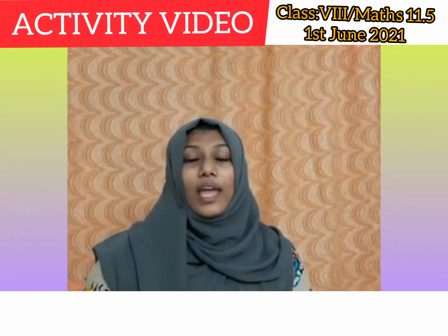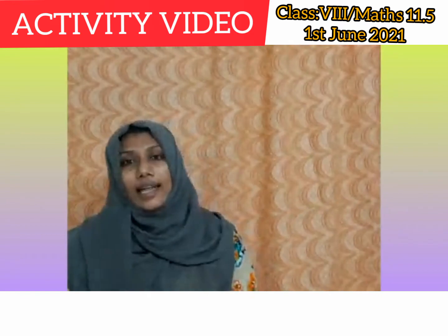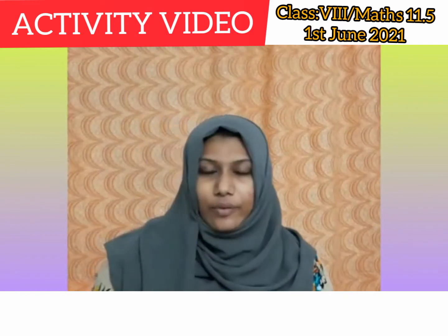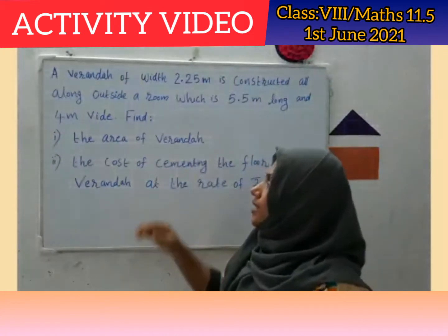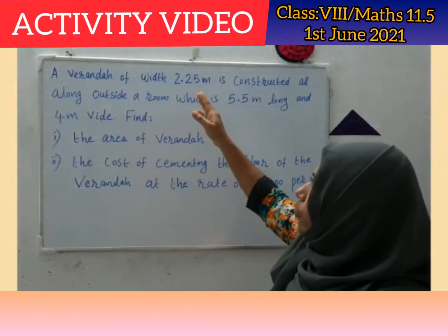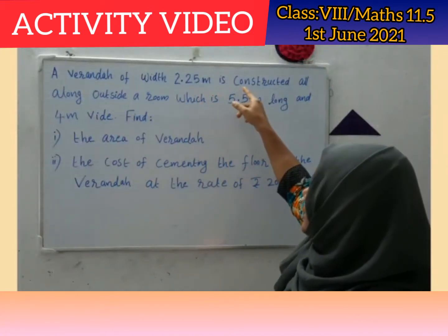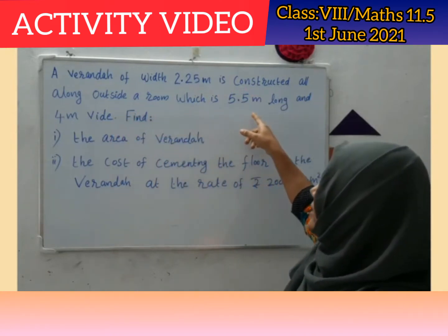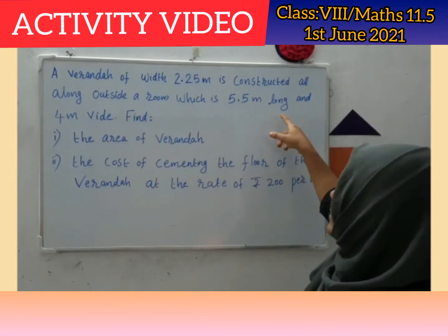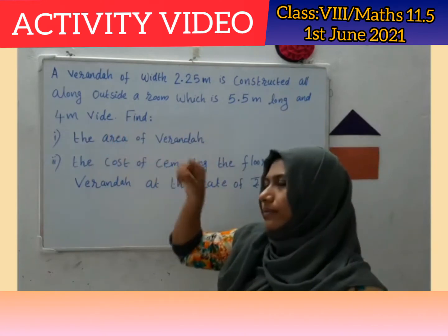In your textbook, exercise 11.4 consists of a number of examples and exercise works related to the application of area and perimeter in our practical daily life. So we can go through one exercise. The question is: a veranda of width 2.25 meters is constructed all along outside a room which is 5.5 meters long and 4 meters wide.